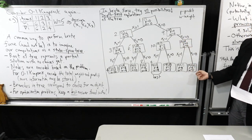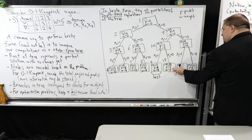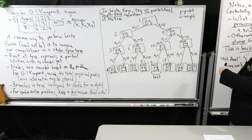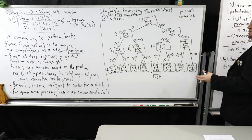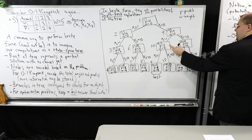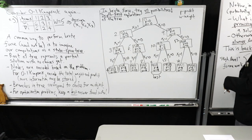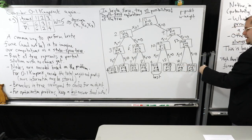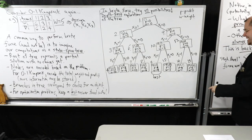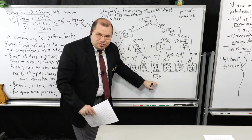We keep going since there may be a better answer. We consider not putting item 3 in — feasible but not better than our best, so we don't update. If we wanted all feasible solutions we'd collect them in a set. Continuing further: we consider item 3 alone — feasible but not better. Finally, not picking any items is feasible but not better. Notice that this optimal solution — items 2 and 3 with profit 6 — is indeed the one we described earlier.